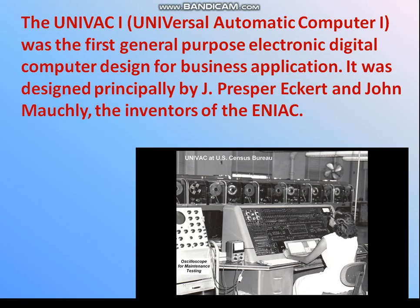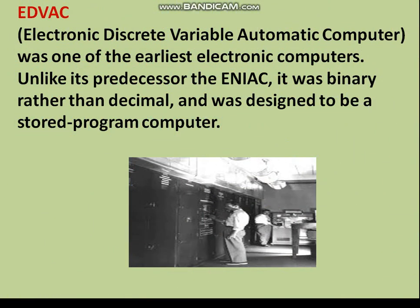UNIVAC — Universal Automatic Computer 1 — was the first general-purpose electronic digital computer designed for business applications. It was designed principally by Jay Presper Eckert and John Mauchly, the inventors of the ENIAC. EDVAC — Electronic Discrete Variable Automatic Computer — was one of the earliest electronic computers. Unlike its predecessor the ENIAC, it used binary rather than decimal and was designed to be a stored-program computer.